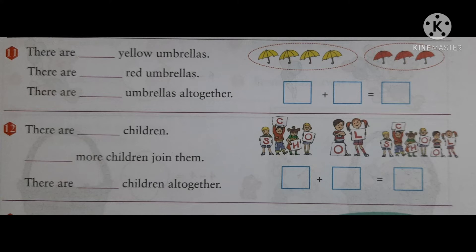Next one is there are dash children. You see. How many children? 1, 2, 3, 4. Dash more children join them. How many children join them? And after joining, all together count and write the answer.